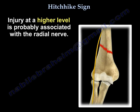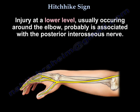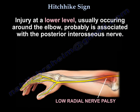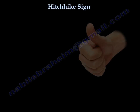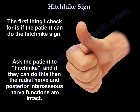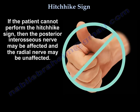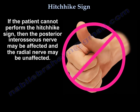So in your mind: if the injury is high, it's probably the radial nerve, and if the injury is around the elbow, it's probably the posterior interosseous nerve. The first thing to check is hitchhiking of the thumb. Ask the patient to hitchhike — if they can do that, then the radial nerve and the posterior interosseous nerve are okay. If they can't, then the posterior interosseous nerve is not okay, but the radial nerve may be okay.